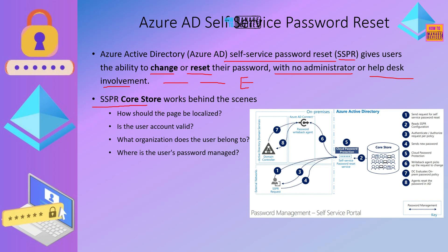Let's quickly look into SSPR core store. This is the core store which we are talking about. It provides localization of website content — depending on the language, German, Dutch, French, or any other language specified in the policy. It will also check whether the user account is valid, what organization the user belongs to, and whether the password is managed from the cloud or on-prem.